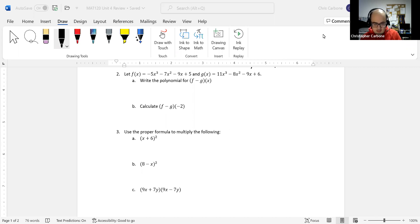and g(x) be 11x cubed minus 8x squared minus 9x plus 6. We first want the polynomial for f minus g of x.